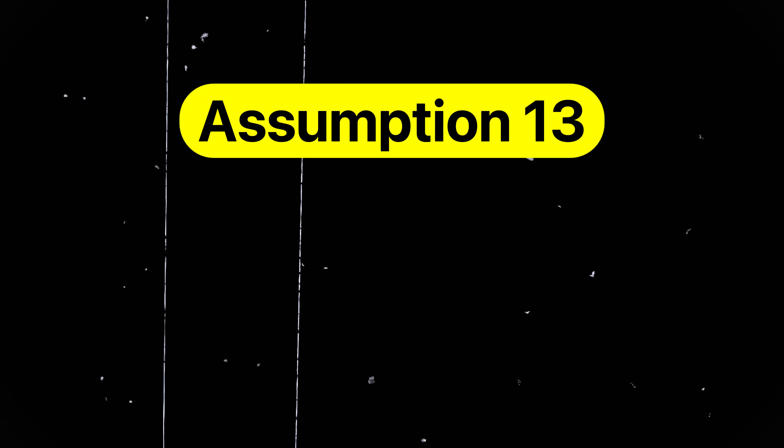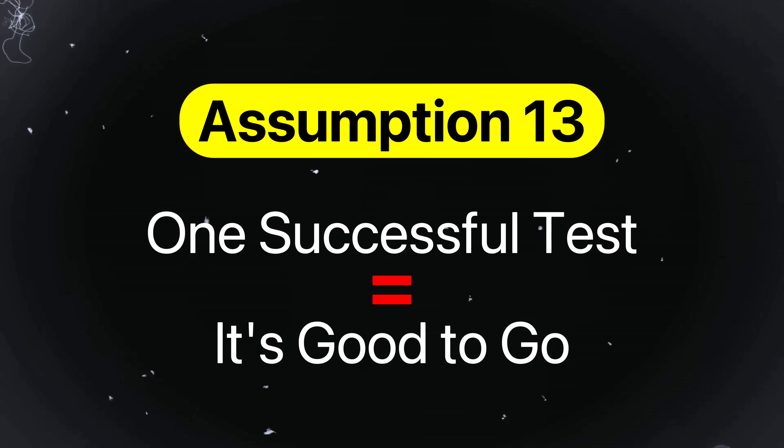Assumption number thirteen is one successful test equals it's good to go. Passing a single test doesn't signify that your product is reliable and certainly doesn't account for process variation. For example, if you drop test a plastic housing once and it survives, that doesn't tell you what happens after five drops or after it undergoes UV aging. A good test includes an appropriate number of samples, edge case scenarios, and clear criteria. You need multiple data points, ideally with production materials, tooling, and processes to verify performance across a batch.